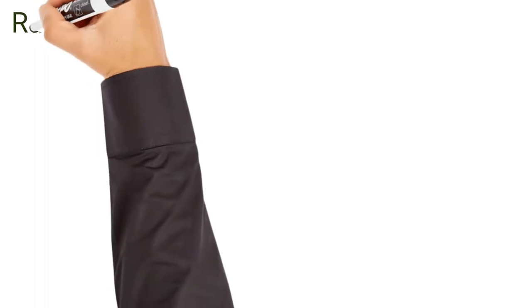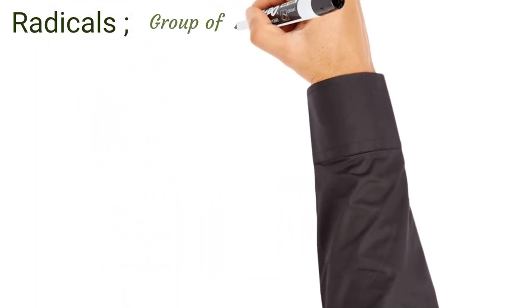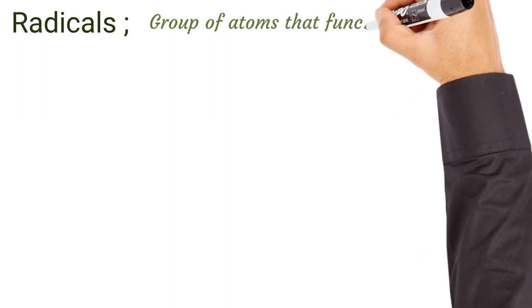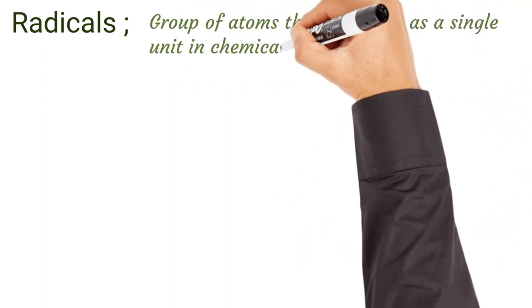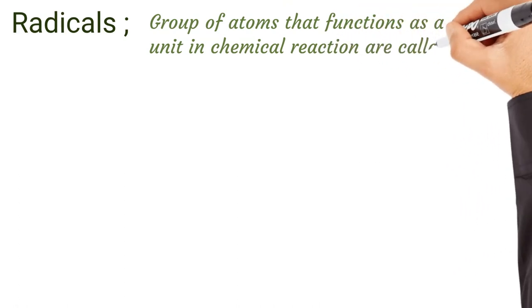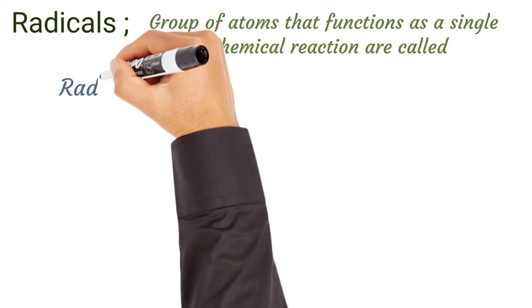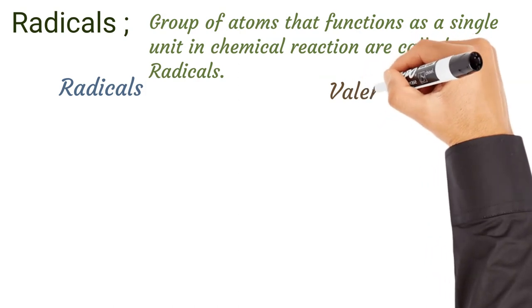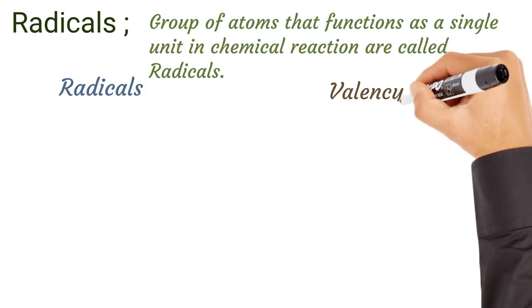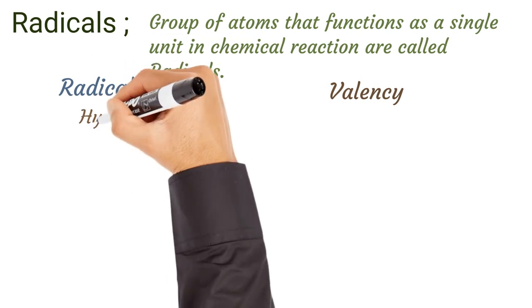Now we have what we call radicals. They are a group of atoms that function as a single unit in chemical reactions. We'll look at some radicals and their valencies and see how we can use them to form compounds.